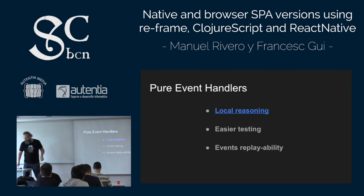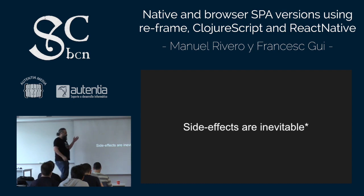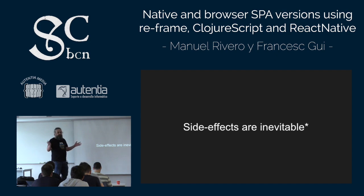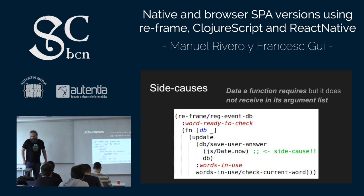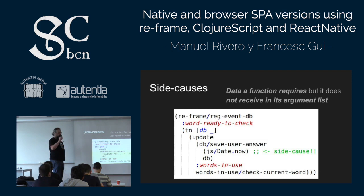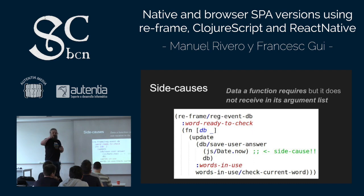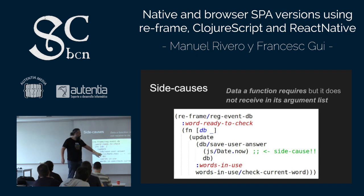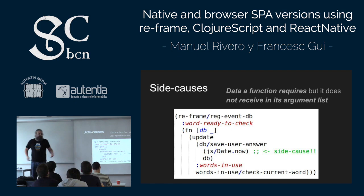But side effects are inevitable. We're going to distinguish between two types. Side causes are data a function requires that it's not getting through parameters — for example, getting the current date, a random number, or an environment variable. These are side causes.